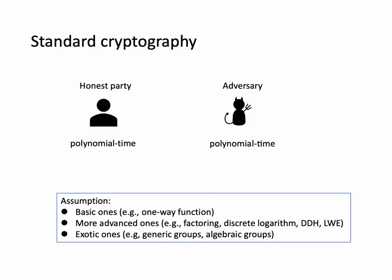This is joint work with Chaxingpan. In standard cryptography, we usually require that the honest party runs in polynomial time, and a polynomial time adversary cannot break the system. By now there have been many constructions proposed based on various assumptions, such as the one-way function, factoring, discrete logarithms, DDH, LWE, or even the generic or algebraic groups.